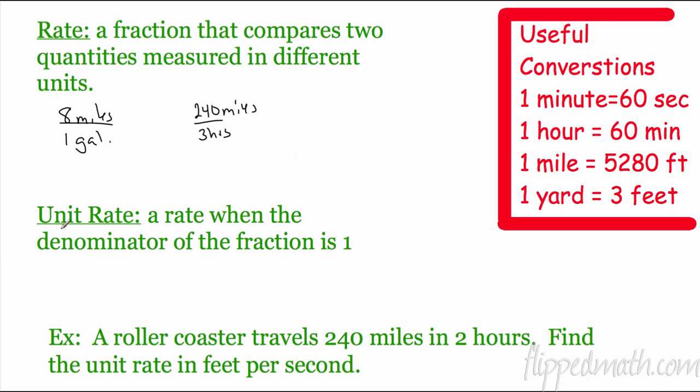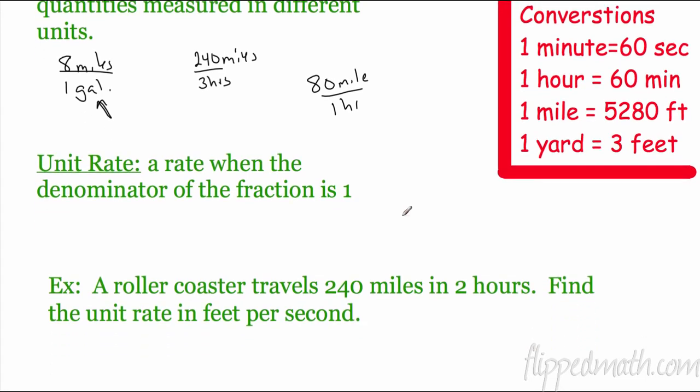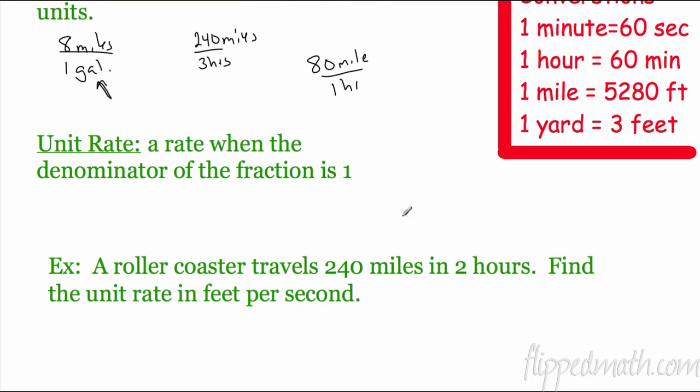Now, rates are great, but we really like unit rates. Unit rates are really nice because it's a rate when the denominator of the fraction is 1, much like this one. So, I can find out that if 8 miles, I have 1 gallon. If I want to find out how many 2 gallons was, it would be easy, 16. It would not be so easy if I had it here, but it is easy to find a unit rate once you have this. All you have to do is divide. 240 divided by 3, that's going to give us 80 miles per 1 hour. So, unit rates are very nice. The denominator is 1.